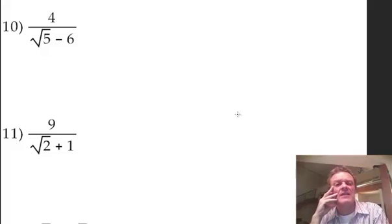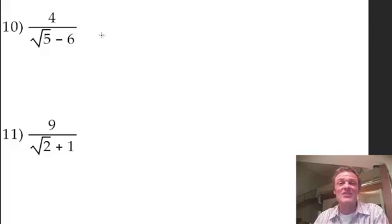Root 5 minus 6. Now, the reason why I showed you about conjugates and how you multiply an expression with its conjugate and you get a nice whole integer, remember from the last videos, well that is what we're going to have to do for this. So the idea about rationalising denominators when you've got something like 10 or 11 is to multiply by its conjugate.